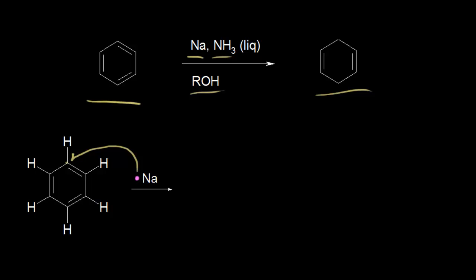We're also going to get some movement of electrons in our benzene ring. These pi electrons in red — there are two of them — are also going to move. This electron is going to come off onto this carbon as well, and then this other electron in red is going to move over to here.